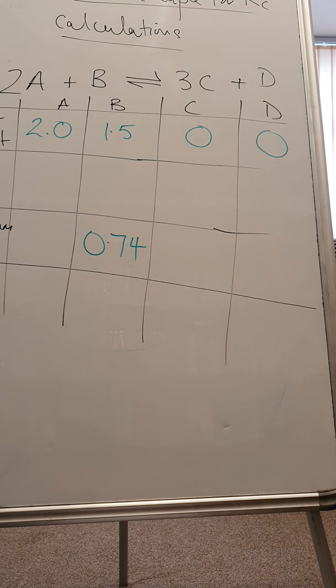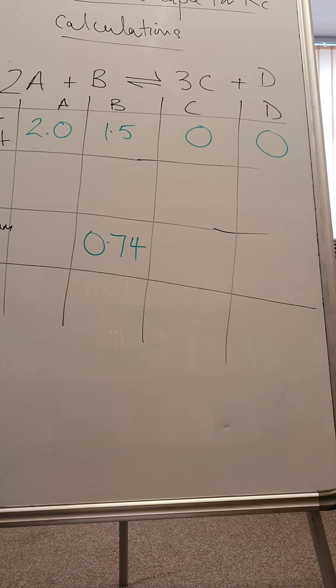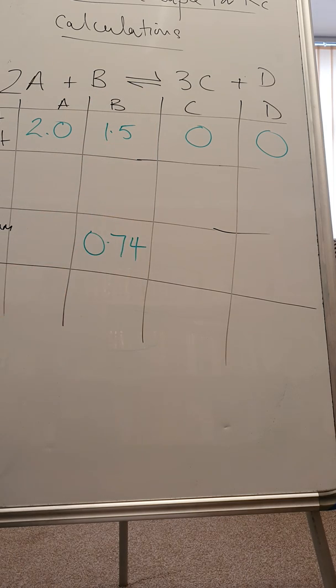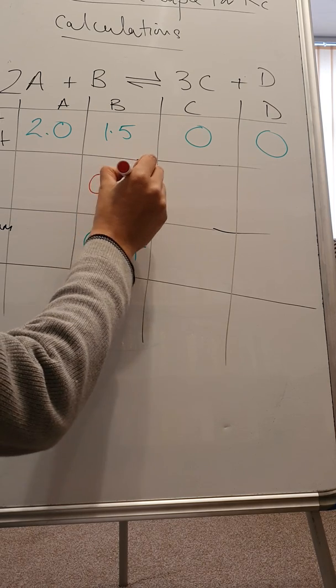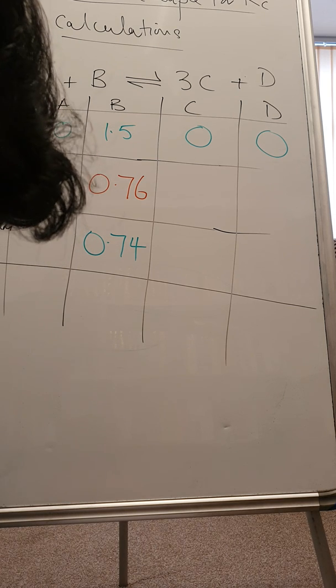So what's reacted then? If we started with 1.5 moles of B, then the moles of B reacting will be 1.5 minus 0.74, which is 0.76. So let's pause there and make a note of that.